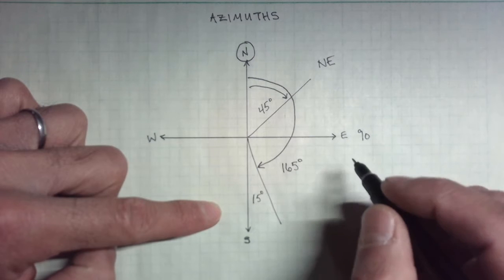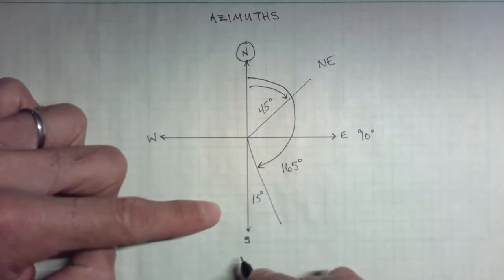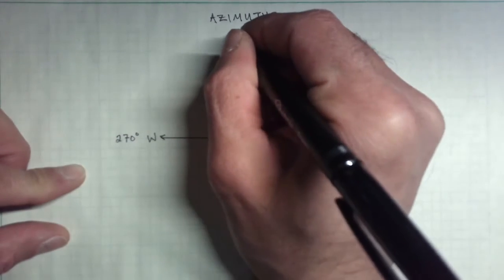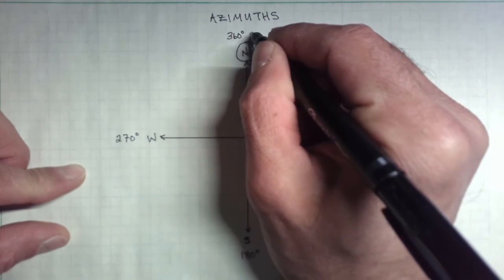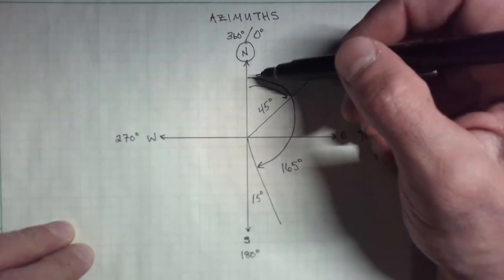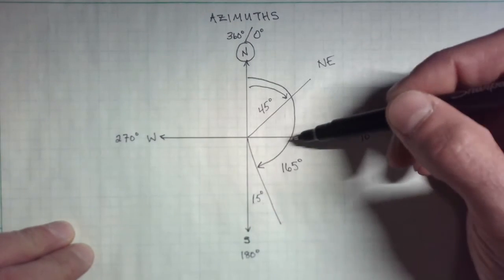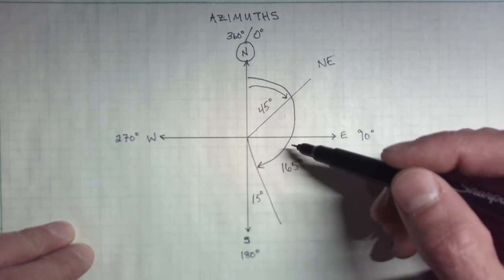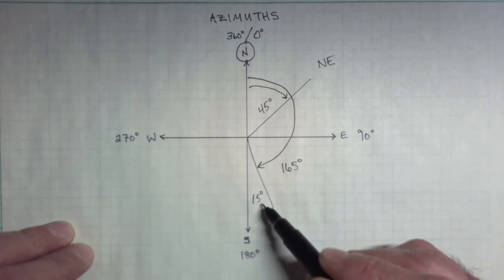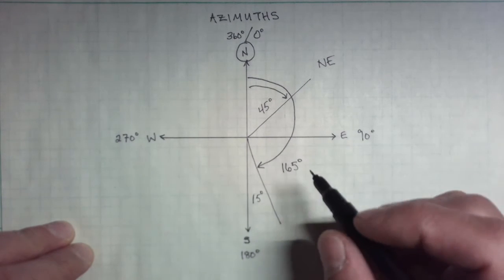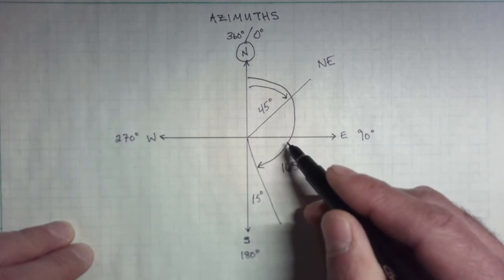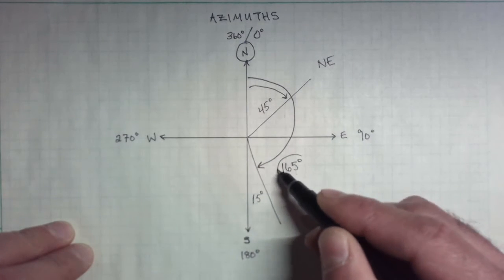Due east is 90 degrees, due south is 180, due west is 270, and north is 360 or 0 — because we start from the north. So knowing it's 90 degrees from north to east, and 90 degrees from east to south: 90 minus 15 equals 75, and adding that to 90 gives us 165 degrees. Both methods confirm 165 degrees as the azimuth.